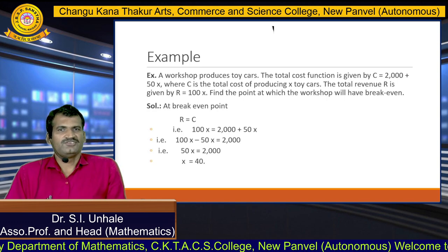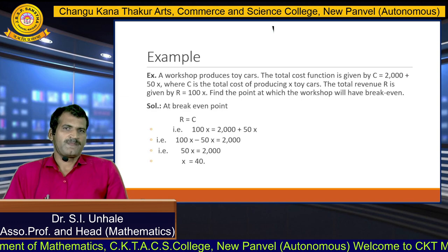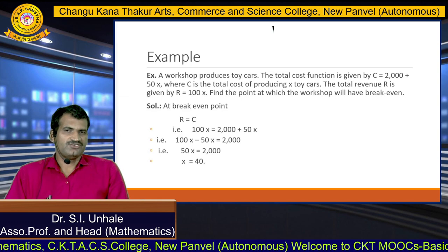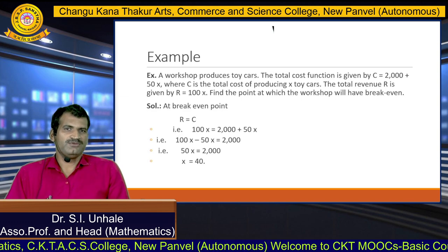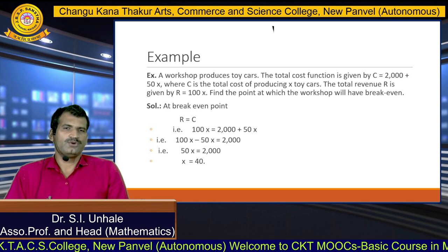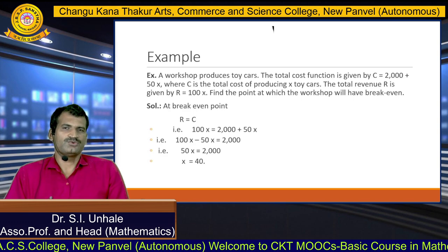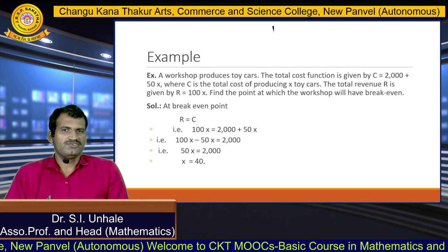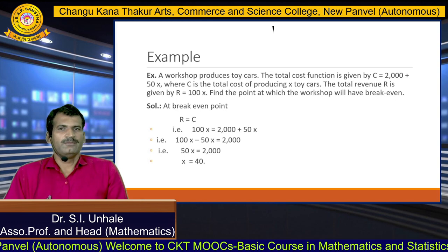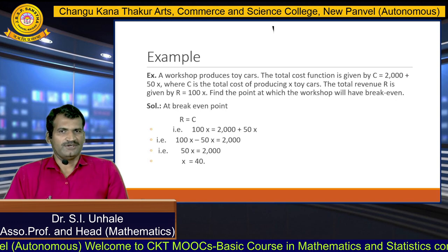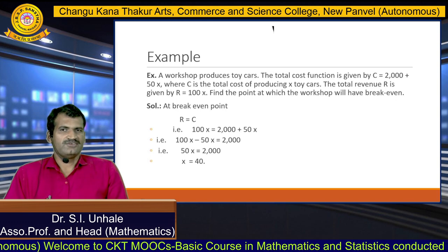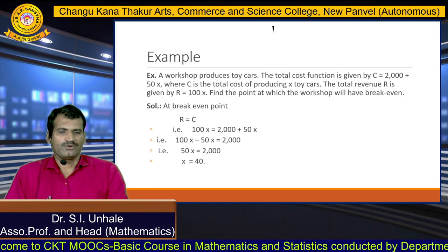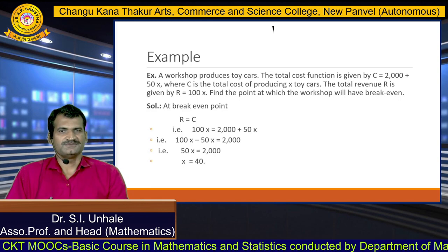That is the point where profit is 0. So x equals 40 is the point where total revenue equals total cost, meaning x equals 40 is the breakeven point. This is the example of the breakeven point in economics. Thank you so much.